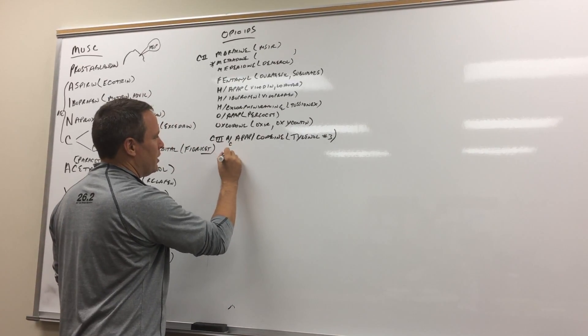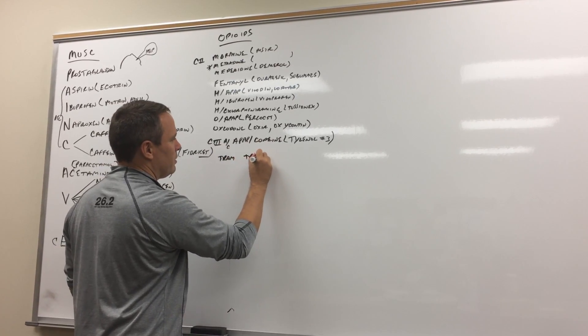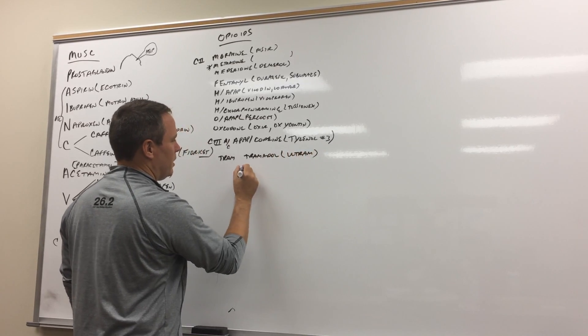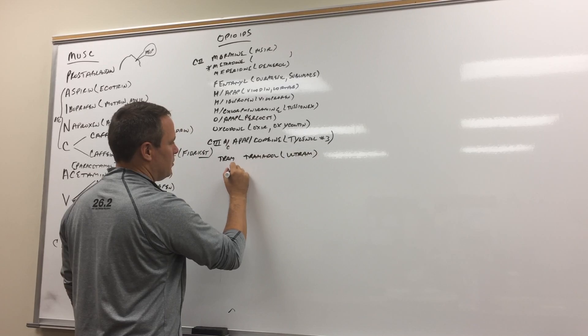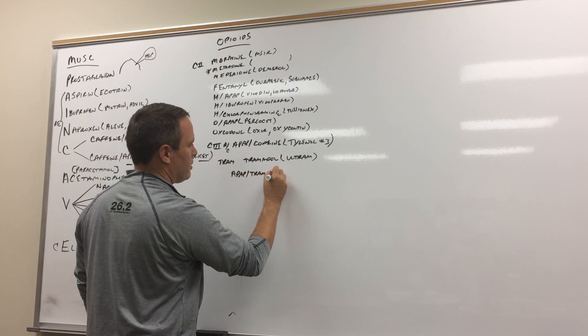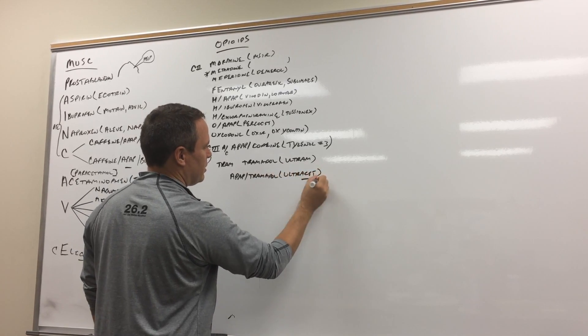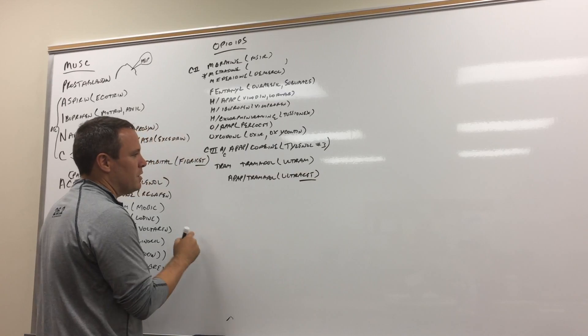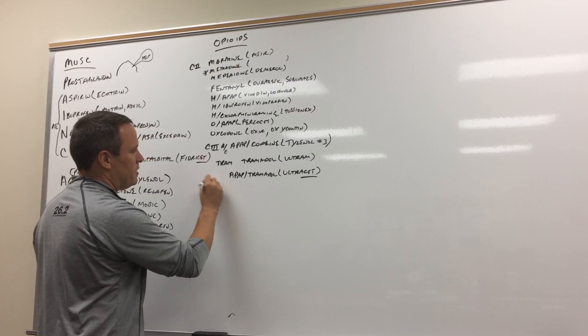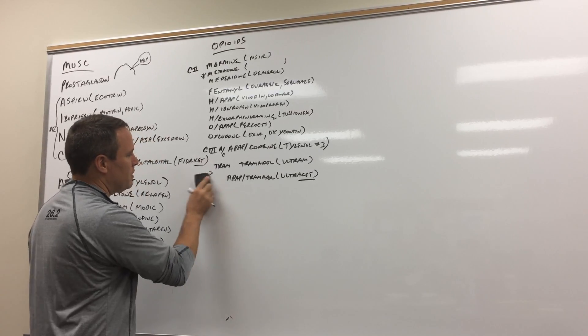And then I think of a tram so you've got air conditioning on this tram for Tramadol and that's Ultram. And then they added acetaminophen to it so you can get APAP with Tramadol and that's cleverly named Ultracet. So the acetaminophen then C4, that's the Tramadol.